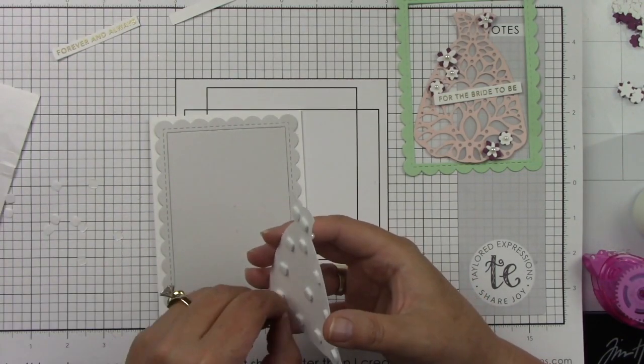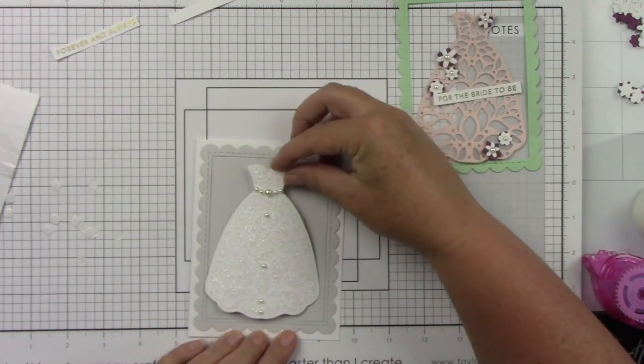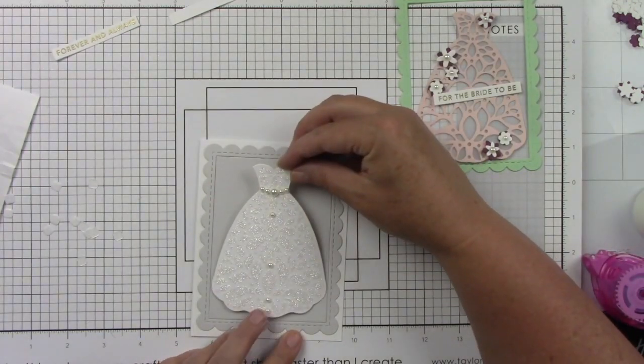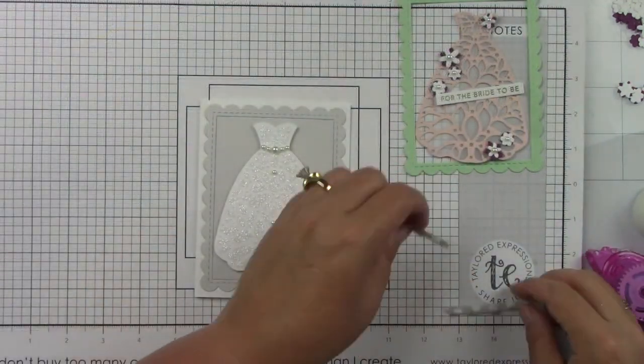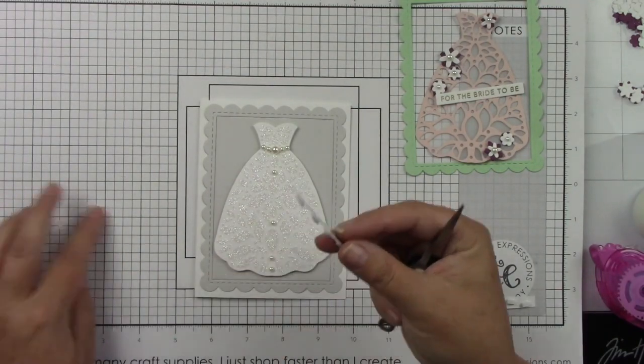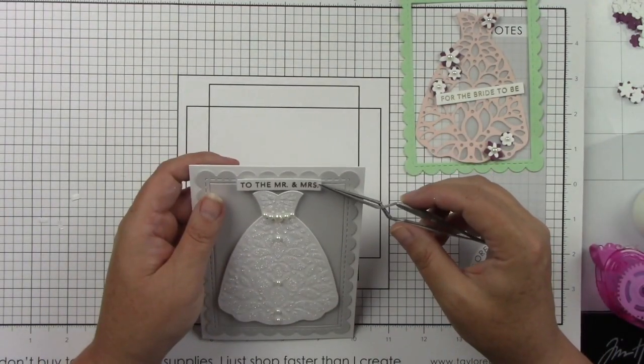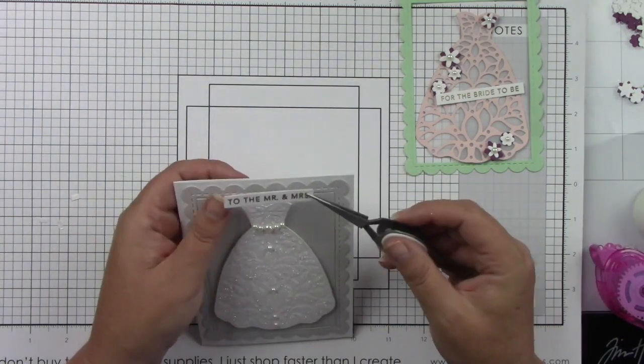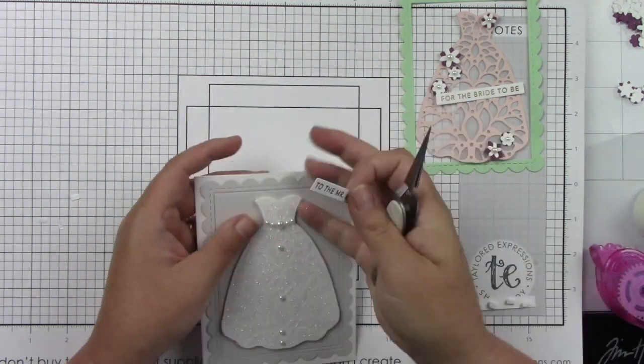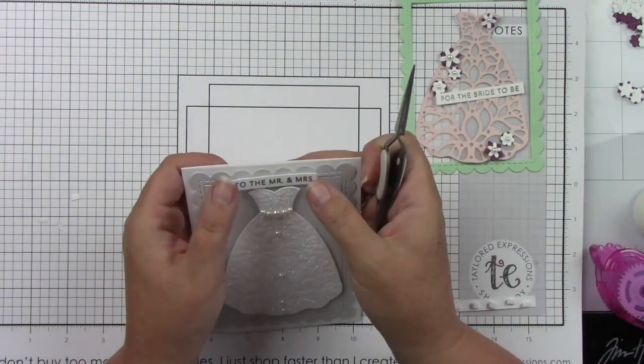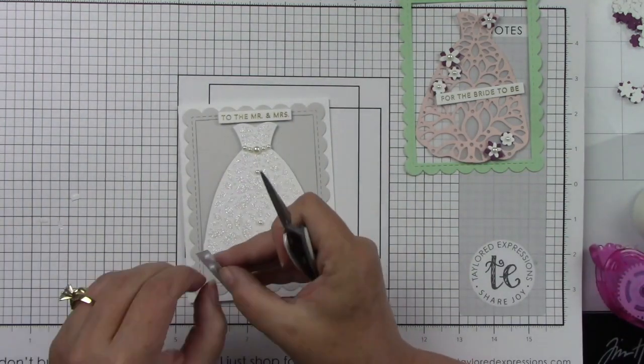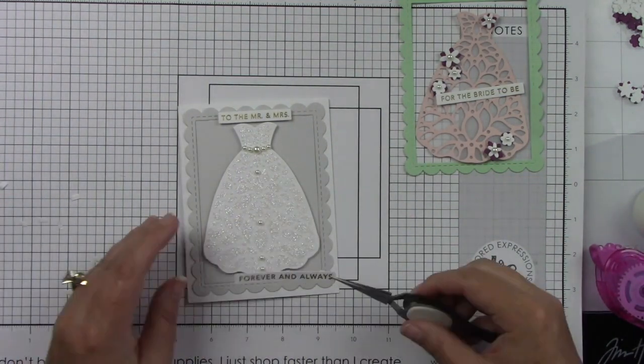I will add some of those 3D foam squares to behind this dress because of course I want this to have some dimension. And I'll just center that right in the middle of that panel. And then those sentiments, I picked out two. The top one is going to say "to the Mr. and Mrs." and then the bottom one says "forever and always." And those also have foam tape behind it. I just feel like this has a really nice classic look to it, and I think having that scalloped frame just really adds kind of that dainty effect to this card.